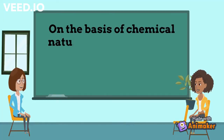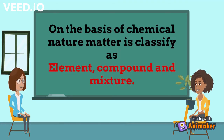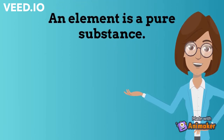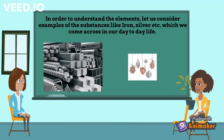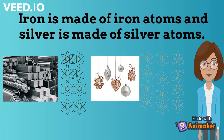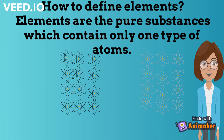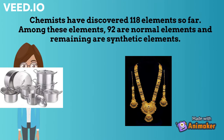On the basis of chemical nature, matter is classified into element, compound, and mixture. But we will focus on elements here. An element is a pure substance. To understand elements, let us consider examples of substances like iron and silver, which we come across in our day-to-day life. Iron is made of iron atoms and silver is made of silver atoms. Elements are pure substances which contain only one type of atom. Aluminium is an element because it contains only aluminium atoms. Gold is an element because it contains only gold atoms. Am I right? You are right.